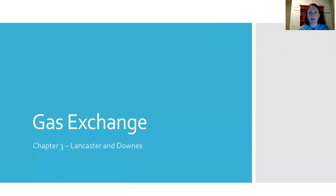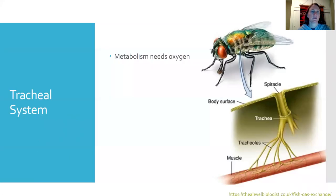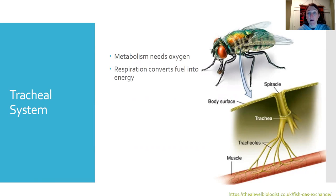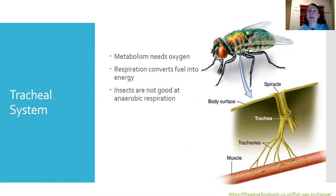Today we're going to talk about gas exchange in aquatic insects. Aquatic insects, just like most insects, have a tracheal system. They require oxygen because they go through metabolism — in particular, to respire, they need to convert fuel into energy, and that takes oxygen. Insects are not good at anaerobic respiration; some organisms have mechanisms to respire in the absence of oxygen, but insects don't do that well.